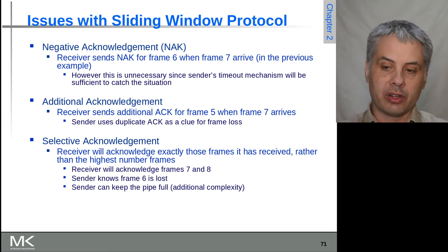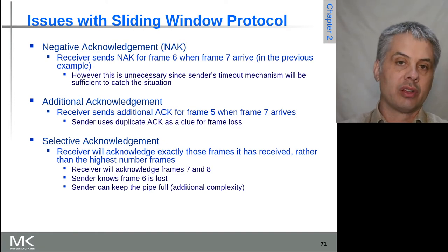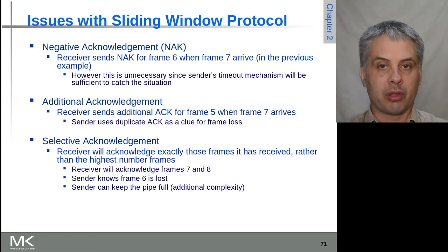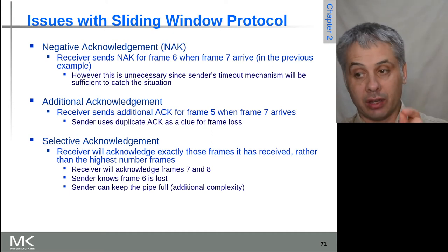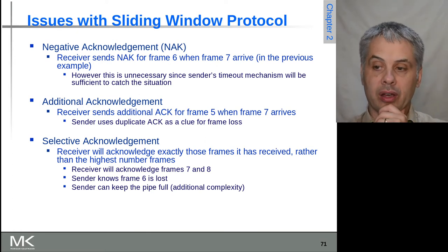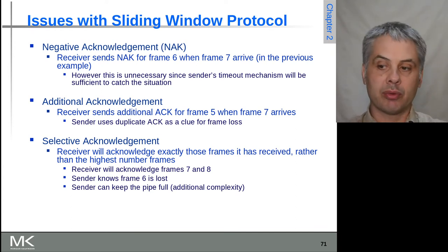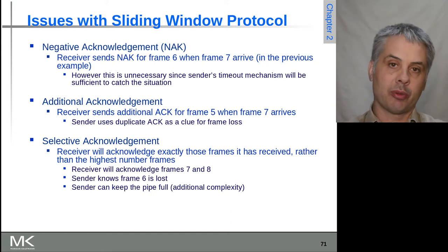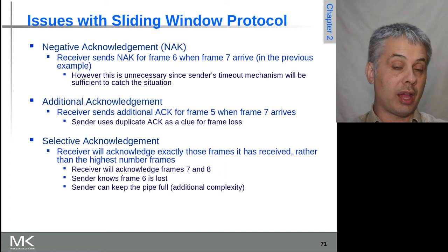Alternatively, we can do a selective acknowledgement arrangement. Instead of acknowledging the highest frame number, we acknowledge exactly the frames that have been received. Every time a frame arrives, we acknowledge that frame. So if the receiver acknowledges frame 5 and then acknowledges frames 7 and 8, the sender will know frame 6 didn't arrive and can resend it. This lets the sender keep the pipeline full and keep throughput as high as possible, at the cost of some additional complexity in the protocol. How critical that is really depends on the link type and the properties of the situation.